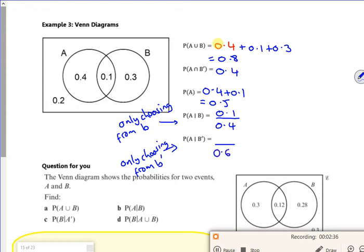So not B is 0.6, and I'm looking where A is on the not B part, which is 0.4 there. That gives us two-thirds.